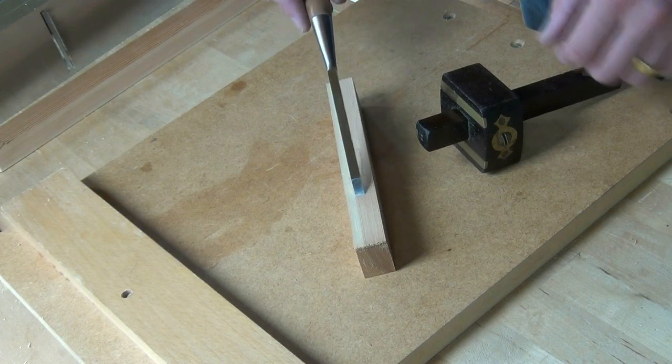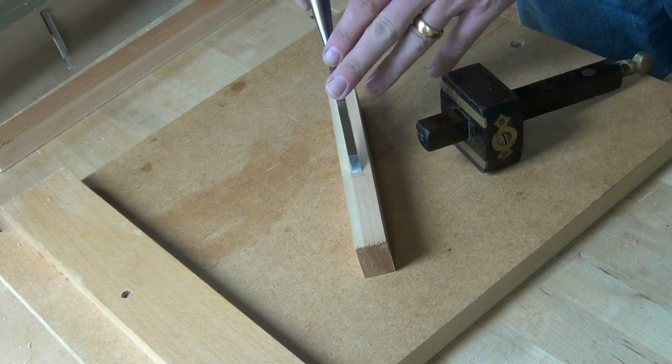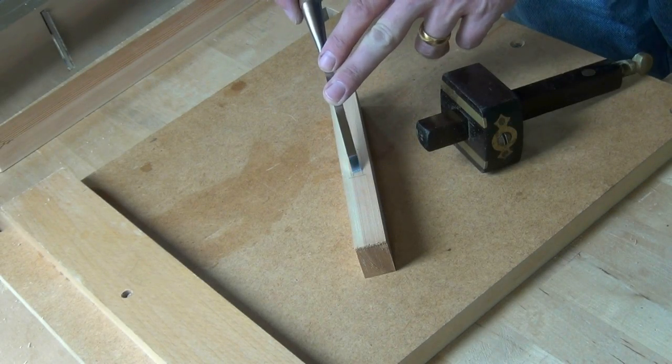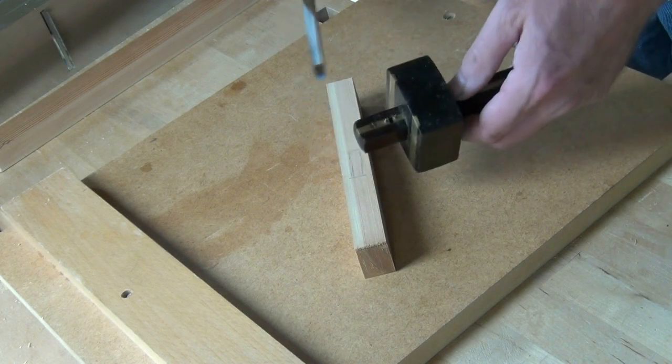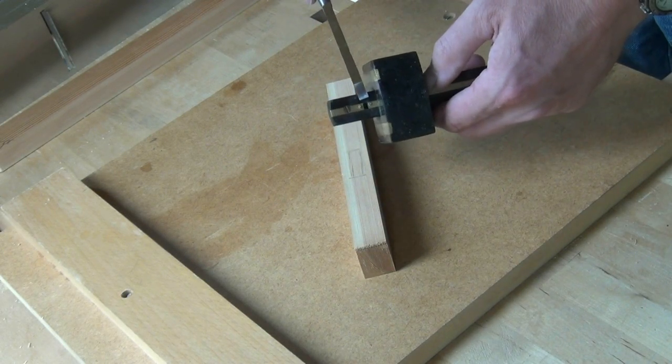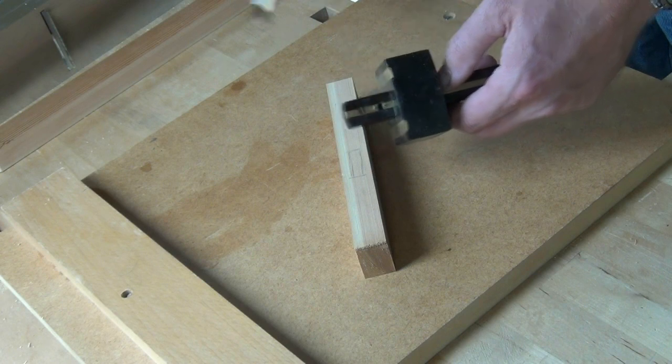I've selected a mortising chisel approximately a third of the width of the components and I've set my mortising gauge to the width of the chisel.